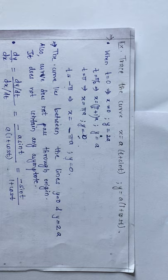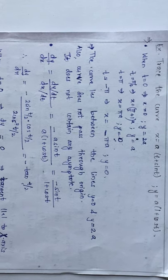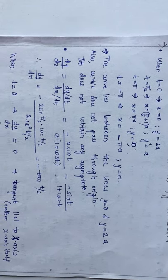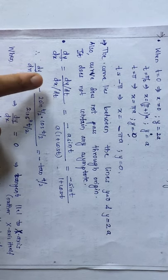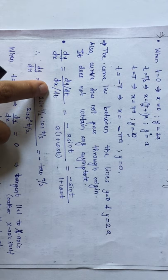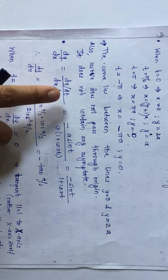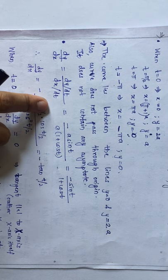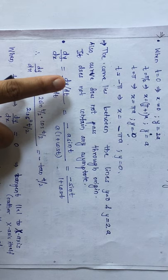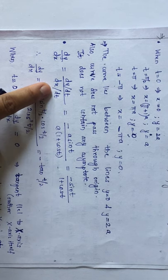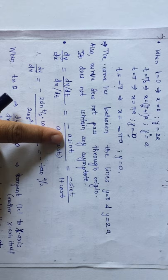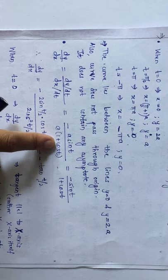We have seen these conditions for asymptotes in earlier remarks. Next, we find tangents parallel to the x-axis and parallel to the y-axis. dy/dx = (dy/dt) / (dx/dt), since both x and y depend on the parameter t. dy/dt gives −a sin t and dx/dt gives a(1 + cos t).